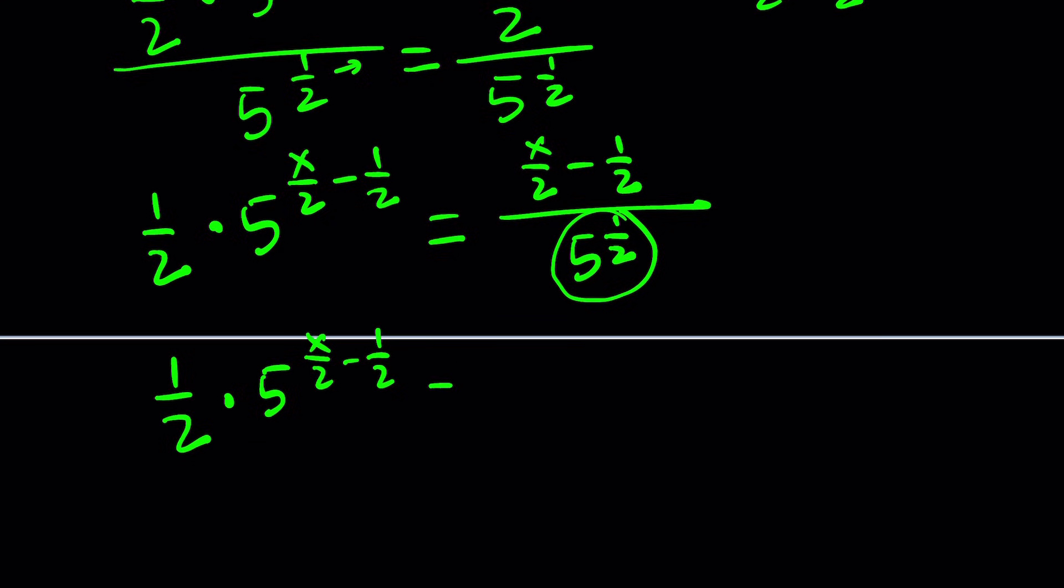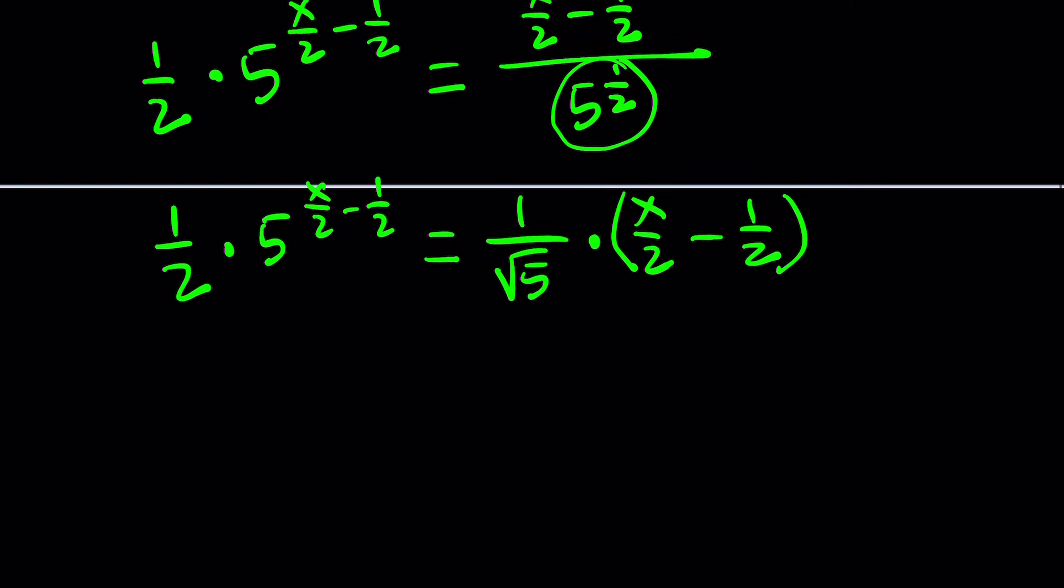It looks messy. I agree. But it's going to get better. Don't worry about it. So we're going to clean it up. But first, notice that this is the square root of 5. So we can kind of take it out and write it as 1 over square root of 5. So it's going to look like this, 1 half times 5 to the power x over 2 minus 1 half. Again, just bringing it down, equals, and I can kind of write this part as 1 over root 5 multiplied by x over 2 minus 1 half.